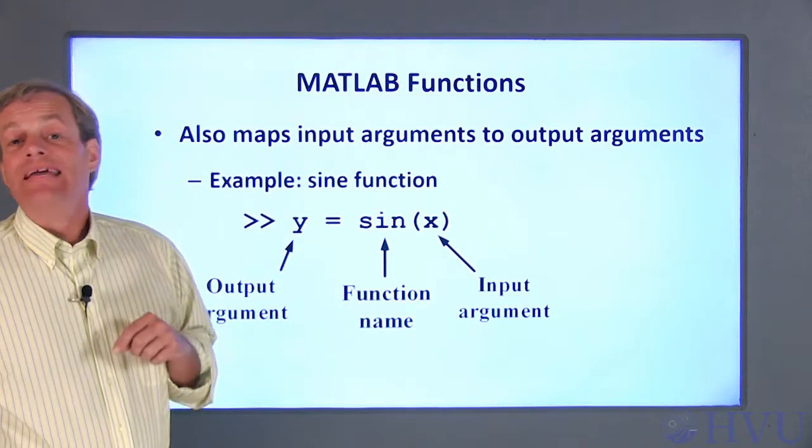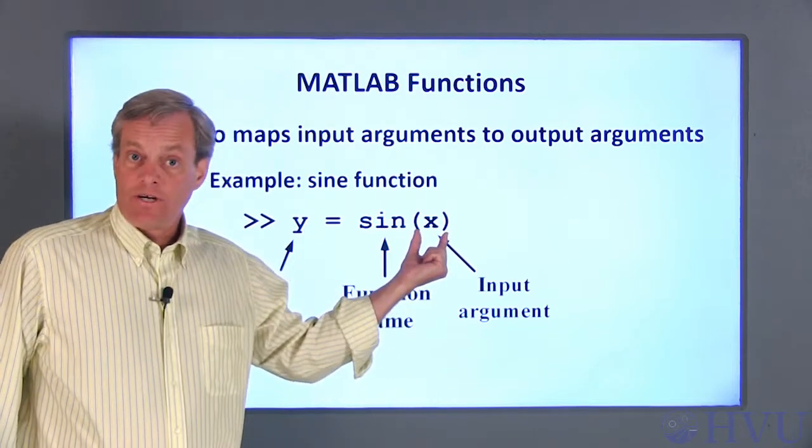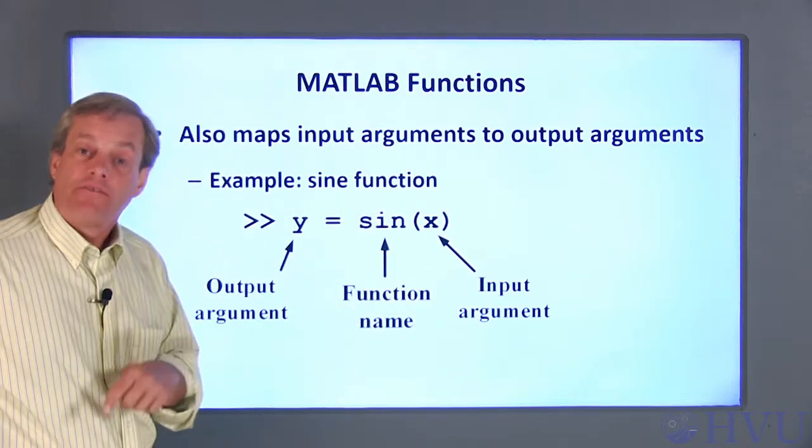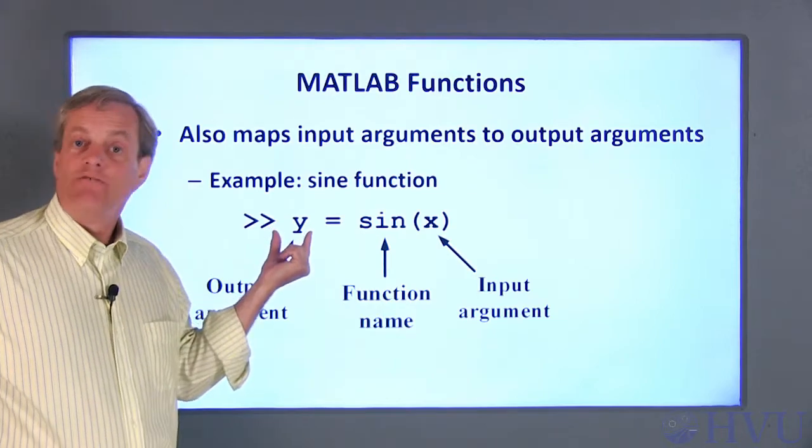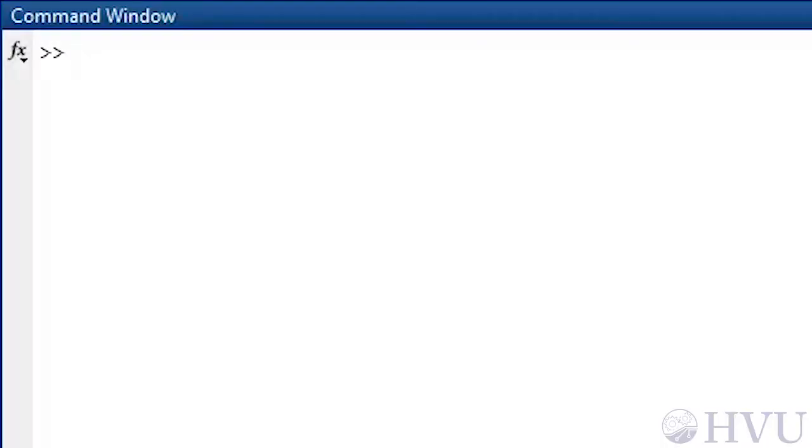So in summary, the input argument, a number, is sent to our function and our function returns an output argument, another number, which gets assigned a variable name. Arguments sent to a function are always numbers. We can put the numbers directly within the parentheses if we want. For example, we can determine the sine of 2 by typing SIN open parentheses 2 close parentheses at the command prompt and pressing enter. By the way, the argument to the sine function must be in radians.